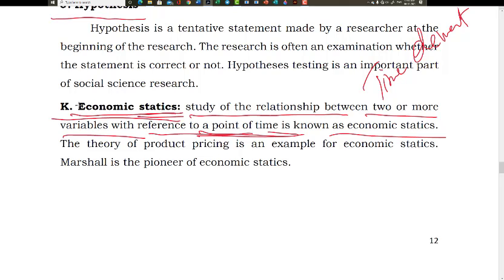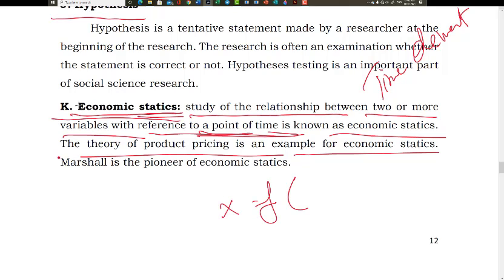Comparative statics — the theory of product pricing is an example. Under economic statics, we have a set of variables: x is a function of p, q, r, x, etc., all at one particular point of time.